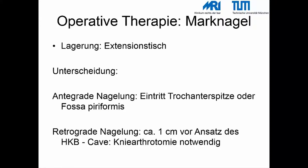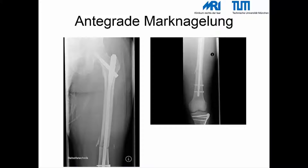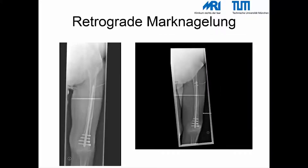Die Standardoperative Therapie ist der Marknagel. Der Patient wird hierfür auf dem Extensionstisch gelagert, und für die antegerade Nagelung ist der Eintrittspunkt an der Trochanterspitze. Beim distalen Femurnagel wird der Nagel durch das Kniegelenk in den Femurmarkraum vorgetrieben. Diese Methode ist derzeit auf dem Rückzug, da man durch ein prinzipiell gesundes Kniegelenk durchgehen muss und das Infektionsrisiko nicht unerheblich ist. Zudem haben sich nicht unerhebliche Rotationsfehlstellungen nach distaler Femurnagelung gezeigt.